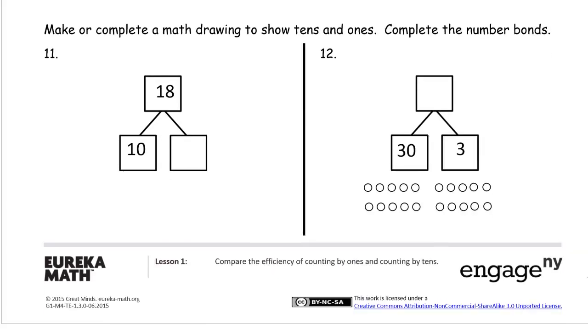And then one, two, three, four, five, six, seven, eight. For eighteen. Or ten, eleven, twelve, thirteen, fourteen, fifteen, sixteen, seventeen, eighteen. If you want to count them all out like that. And then see that there's eight ones.